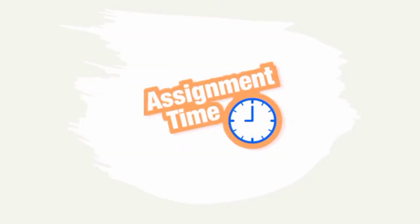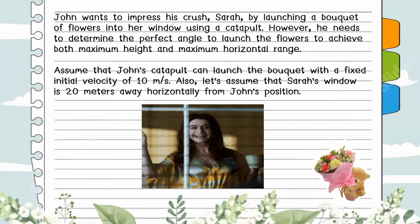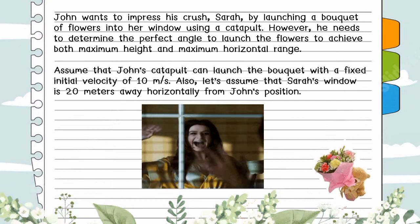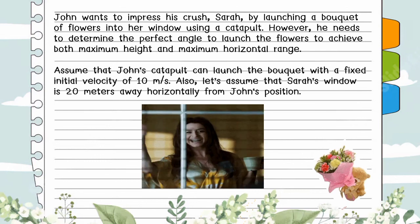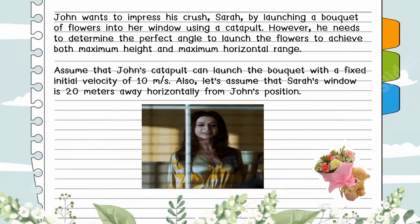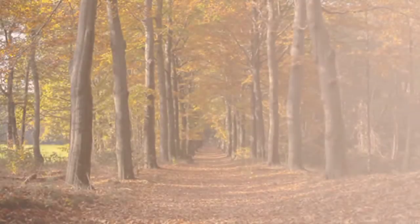For your assignment: John wants to impress his crush Sarah by launching a bouquet of flowers into her window using a catapult. He needs to determine the perfect angle to achieve both maximum height and maximum horizontal distance. Assume John's catapult launches the bouquet with a fixed initial velocity of 10 meters per second, and Sarah's window is 20 meters away horizontally. Can you help John determine the angle at which he should launch the bouquet to achieve the highest possible range and height?